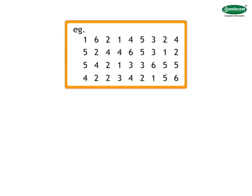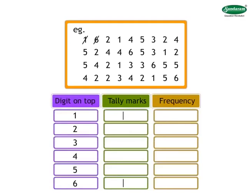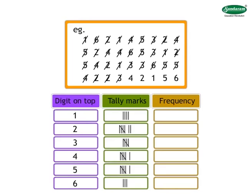Example: The digits obtained each time on the topmost surface on throwing a dice 36 times are given below: 1, 6, 2, 1, 4, 5, 3, 2, 4, 5, 2, 4, 4, 6, 5, 3, 1, 2, 5, 4, 2, 1, 3, 3, 6, 5, 5, 4, 2, 3, 4, 2, 1, 5, 6. Observe the scores.